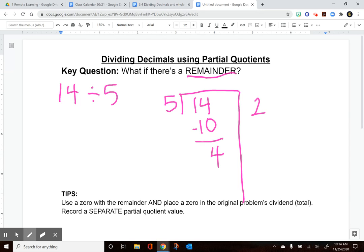We're going to use a zero with the remainder, and when we do that we're changing the place value of everything. The original problem gets a decimal after the dividend total, which is the 14, and a zero on that value. The other step is to record a separate partial quotient value, something that's separate from two wholes.